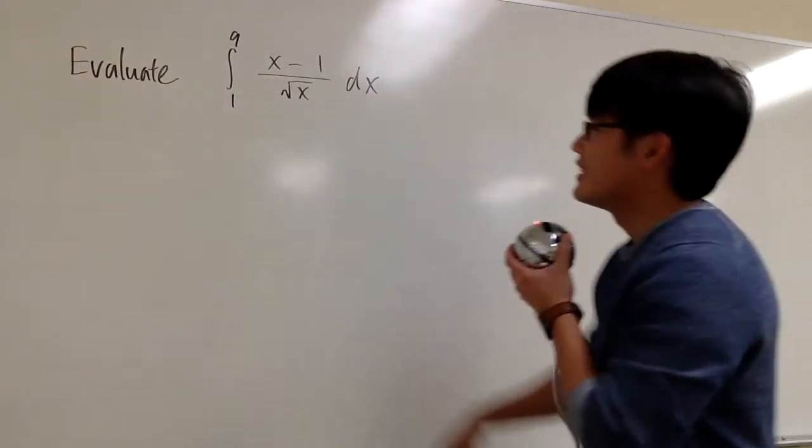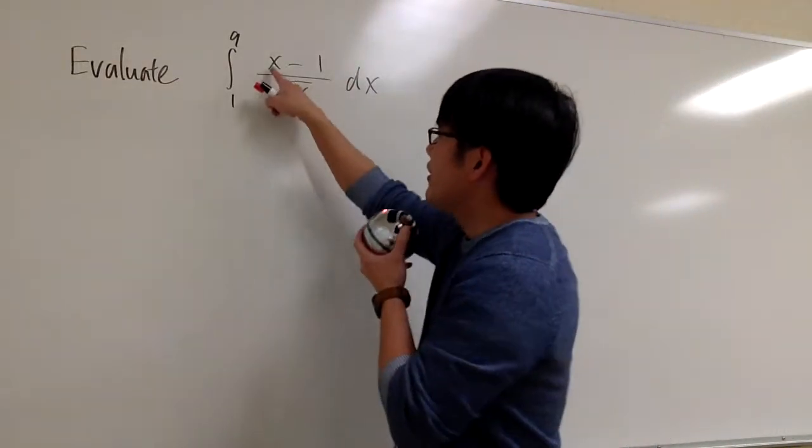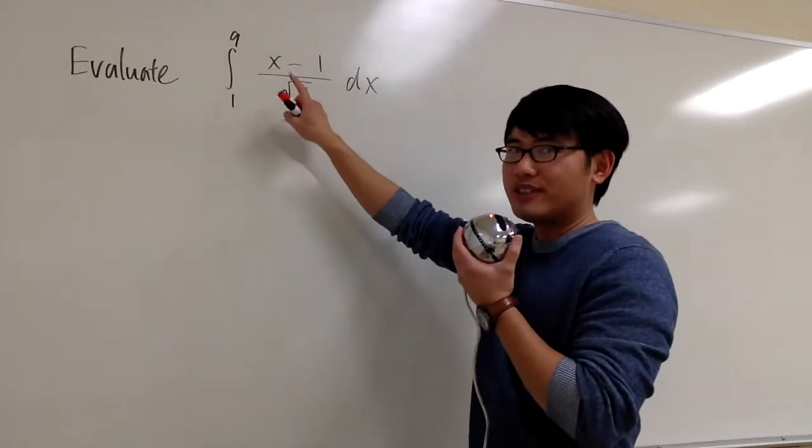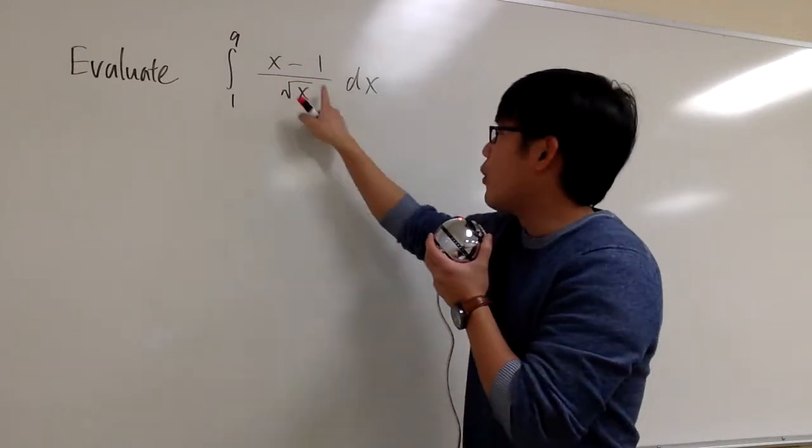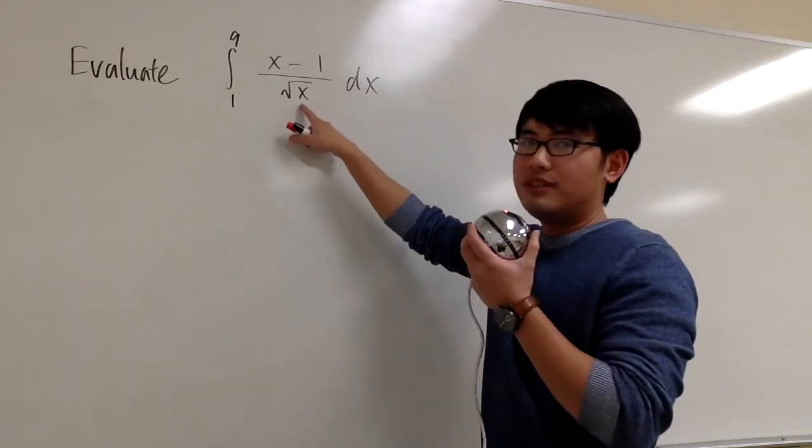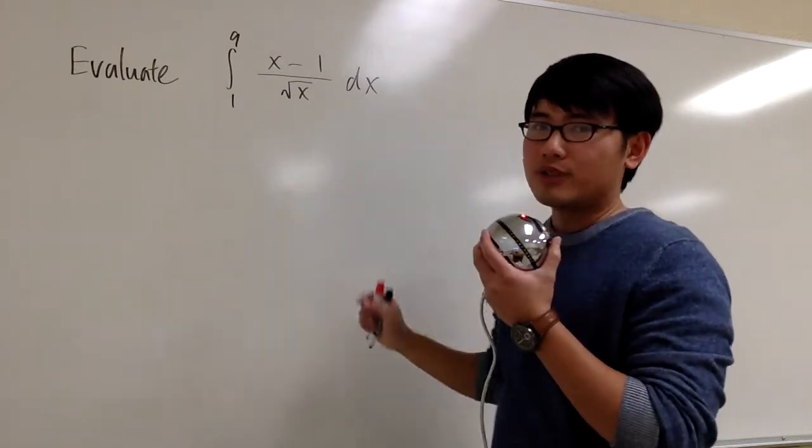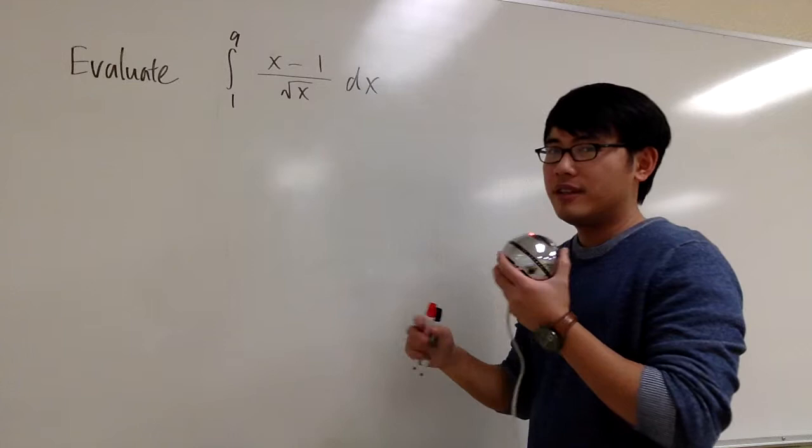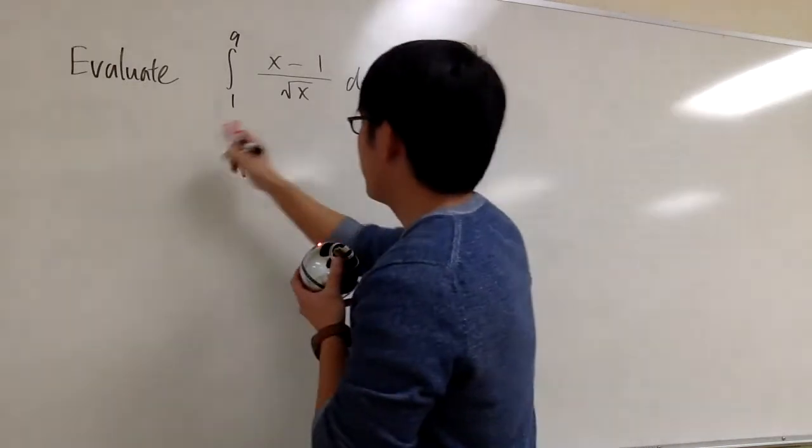Okay, let's do more integrations. The integral from 1 to 9, and here we have a crazy expression: x minus 1 on the top over square root of x. Luckily, we only have one thing on the bottom, and this is a power function, so we should try to split the fraction to see what we can do after that.